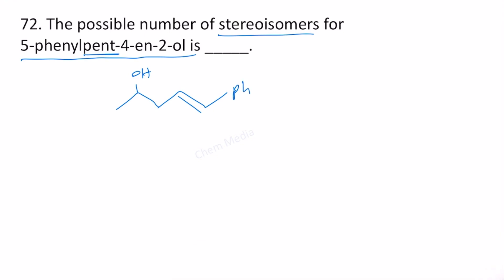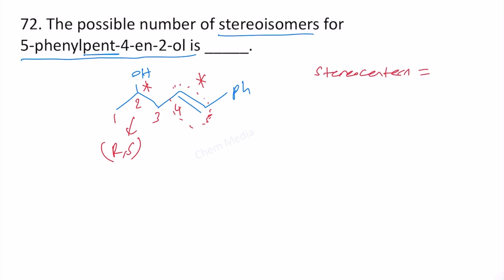Let us number it 1, 2, 3, 4, 5. We have a chiral center at position 2, therefore this could be R as well as S. But we need to consider geometrical isomerism also here, therefore that is another stereocenter. So the number of stereocenters here is equal to 2.